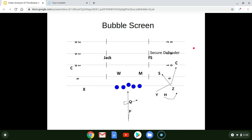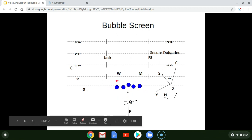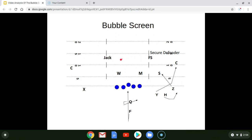We're looking at the bubble screen. Here we're looking in a trips formation usually to the field. We're not going to be concerned with what's happening in the box. This is going to be a 4-2 box, middle open shell defense.